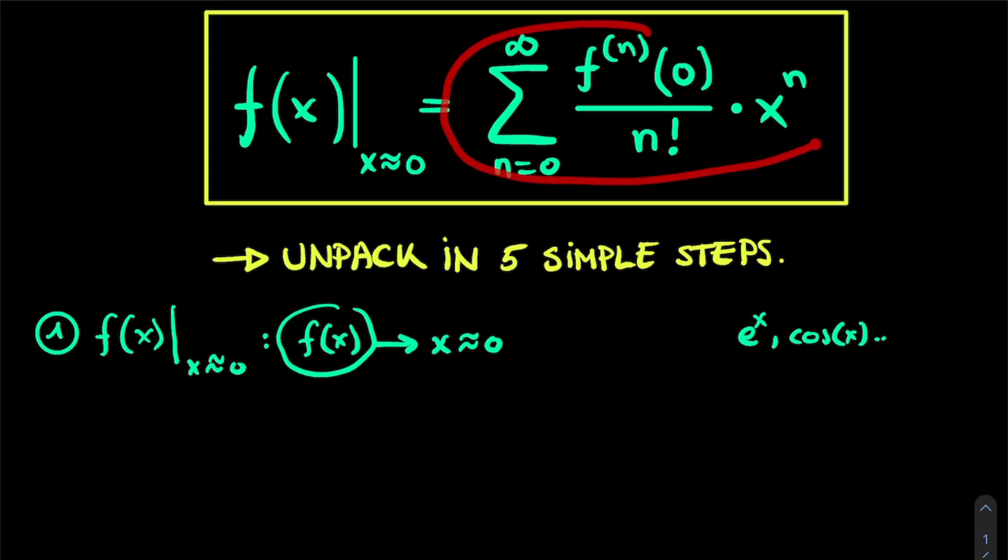So let's now focus on the right hand side of this equation. For instance, for the second step, we'll look at the term f superscript n of 0. Now what does this mean?